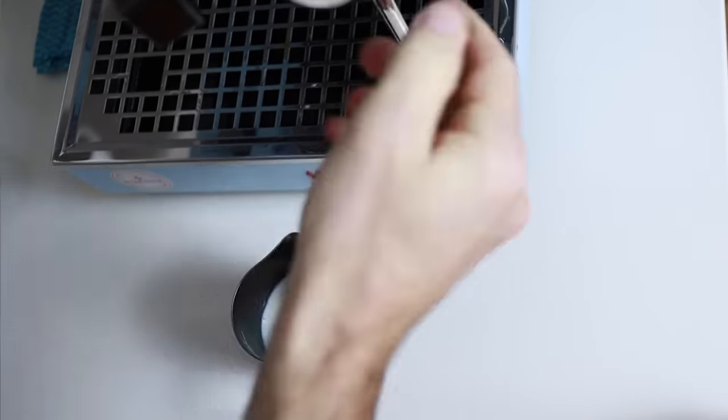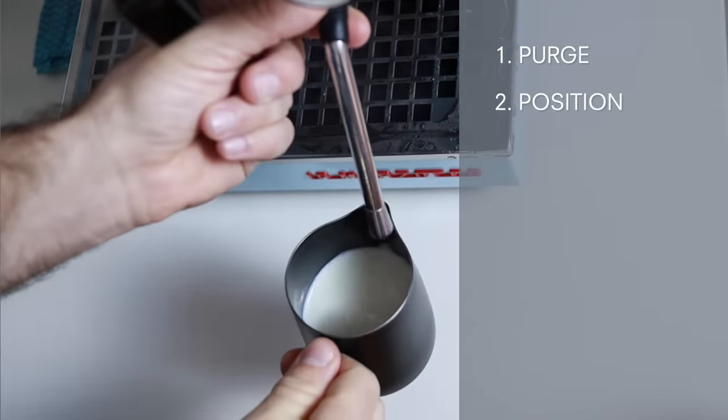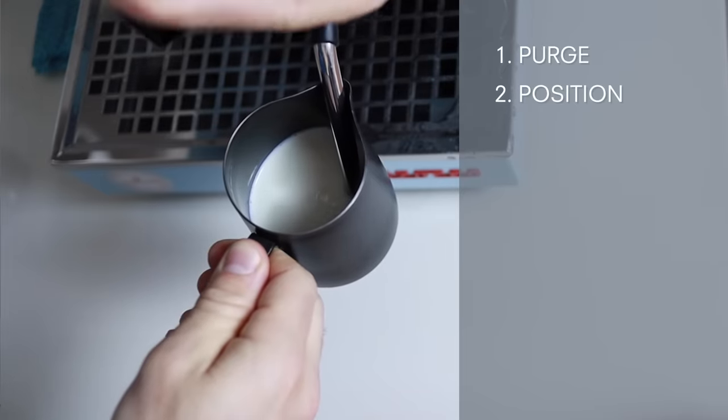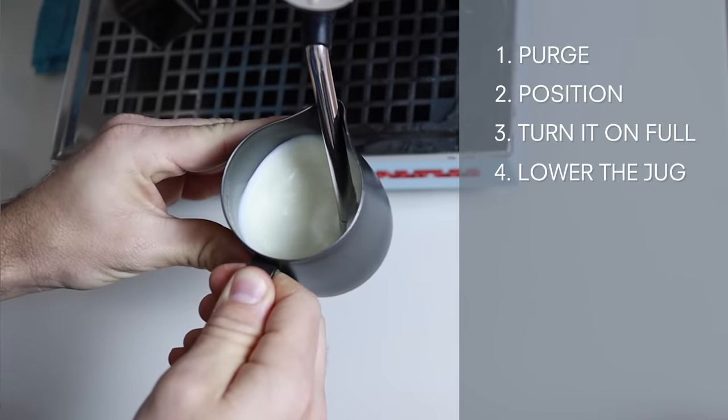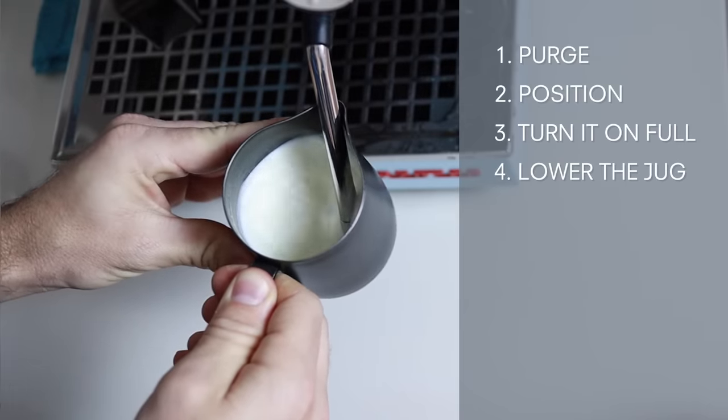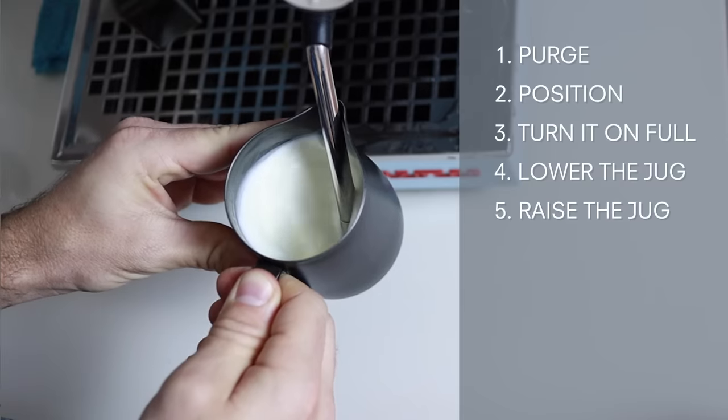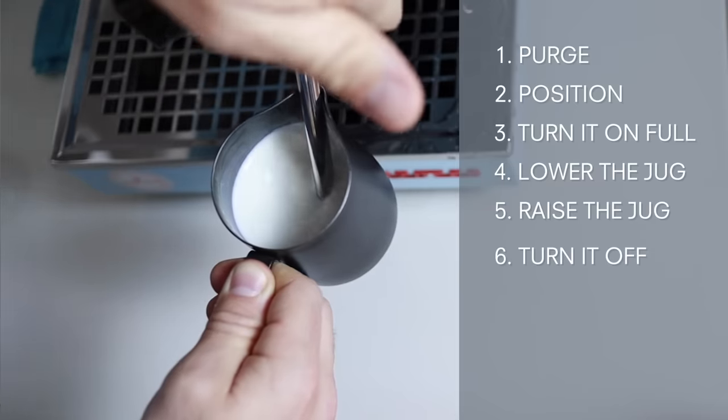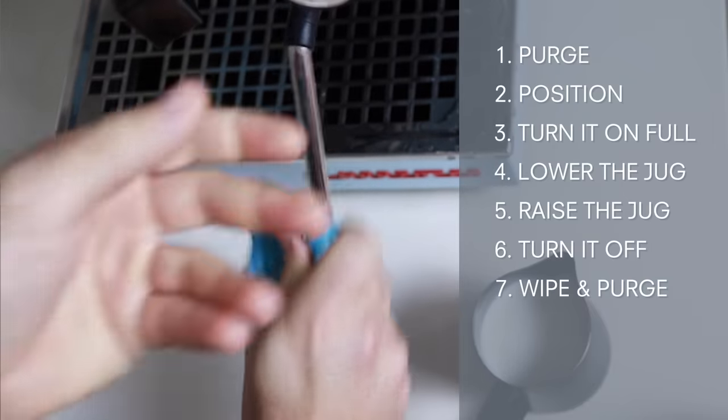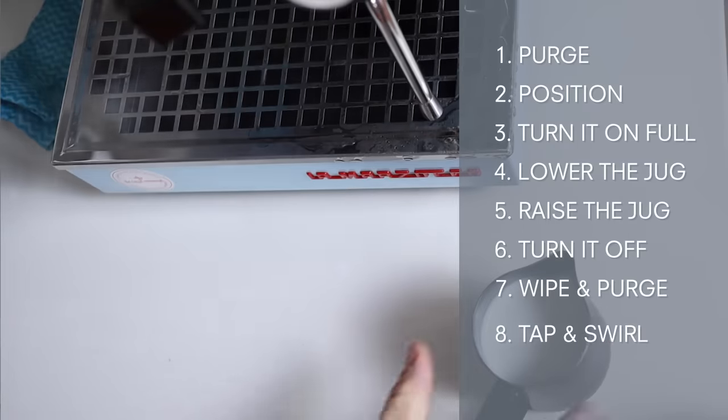Let's just recap that whole process in real time. First, we're going to purge the steamer. Then we're going to position the steaming wand so that it creates a whirlpool within the jug. We're going to crank the steam on full. We're going to lower the jug until we hear a steady kissing sound. When the milk's expanded by around 20%, we're going to raise the jug a little and continue to spin that milk. When the jug is too hot to touch, we're going to stop the steamer. We're going to wipe and spray the steamer to clean it off. And then we're going to tap and spin that jug on the bench.